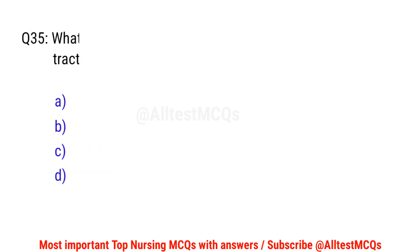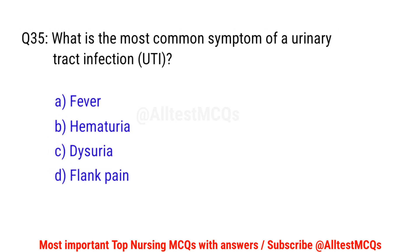Question number 35. What is the most common symptom of a urinary tract infection? The correct option is C: Dysuria.